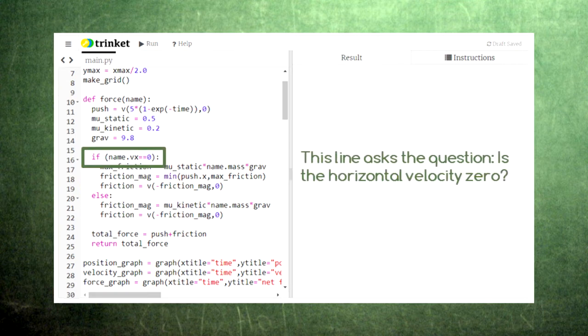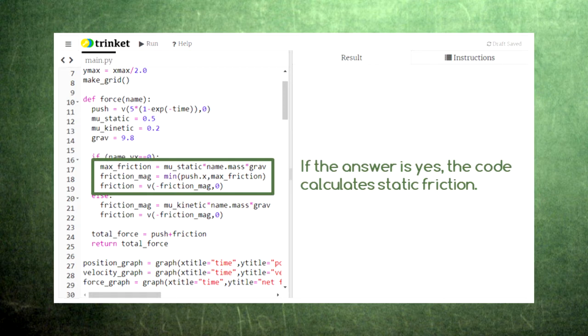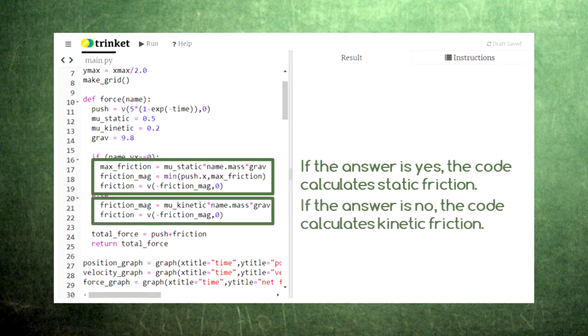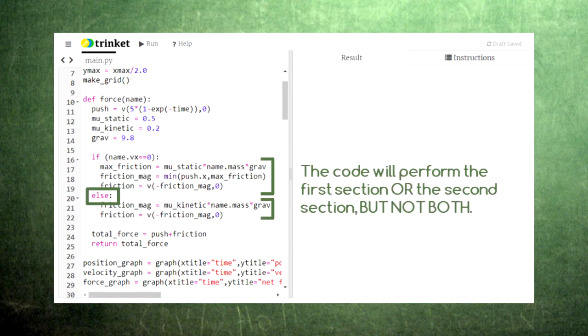This line marked with IF will check for whether the crate has zero velocity. If so, then we need to use static friction. Otherwise, we need to use kinetic friction. The line marked with ELSE means that the code will either perform lines 17 through 19 or perform line 21, but not both.